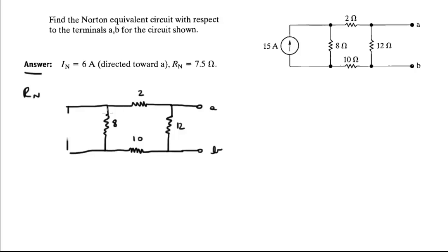As you can see, these three are in series. The 2, the 8, and the 10 are in series, and they come out to be 20 ohms. So you can replace the circuit by this circuit. This is 12, and this is 2 plus 8 plus 10, which is 20.